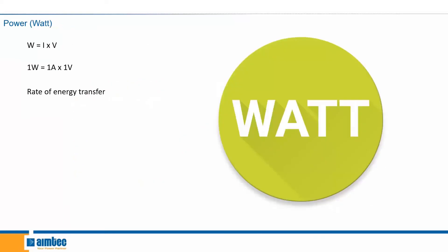Next we'll be moving on to power, which is measured in watts. Power is a function of current and voltage. If we look at one watt equals one amp times one volt — if we increase amperage by two, we'll have to decrease the voltage by two. The wattage, or the power, is the rate of energy transferred. So the greater the power, the more energy is transferred.